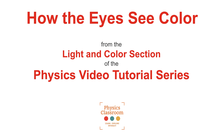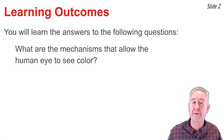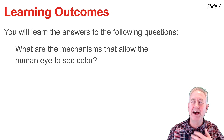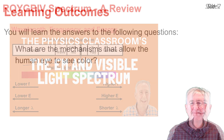Welcome to the Physics Classroom's video tutorial on light and color. The topic of this video is how the eyes see color, and we want to know what are the mechanisms that allow the human eye to see color. I'm Mr. H. Let's get started.